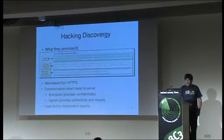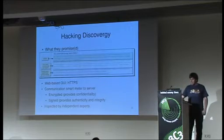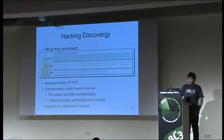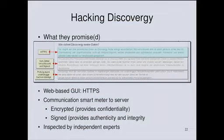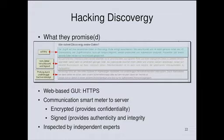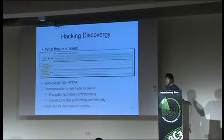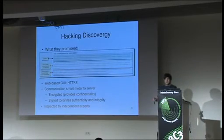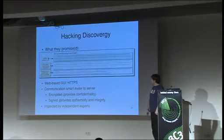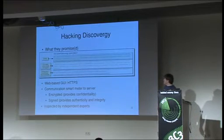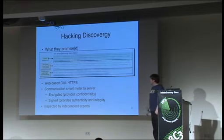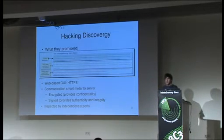Now we're going to the hacking part. I'm the electrotechnics guy, also a Windows user, and not a very good programmer, but I was curious about the DiscoverG smart meter. I ordered it and looked on their website. They said: how does DiscoverG protect your data? In the green section they say they use a web-based GUI with HTTPS — so if you enter your password, everything is secure and encrypted. The yellow section says the smart meter uses only an encrypted communication method, and the data is signed so you cannot alter it.